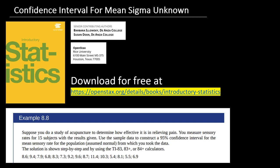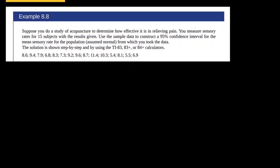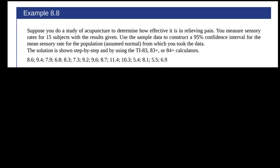In this video I'm going to be discussing how to find a confidence interval for the population mean when sigma is unknown, using example 8.8 from the free online introductory statistics book. Suppose you do a study of acupuncture to determine how effective it is in relieving pain. You measure sensory rates for 15 subjects. We want to construct a 95% confidence interval for the mean sensory rate for the population, and we're going to assume that this data is normally distributed — that is an important assumption.